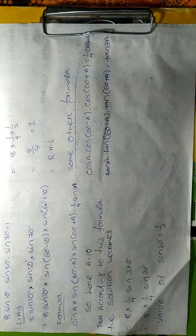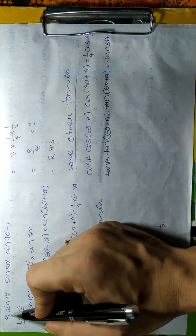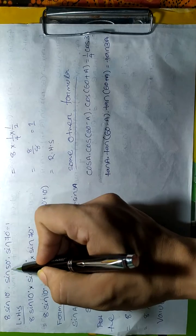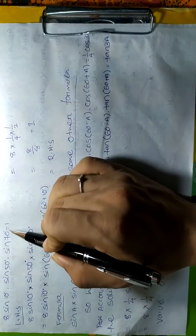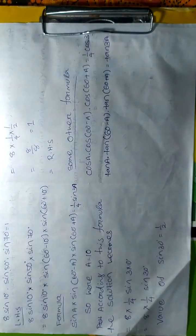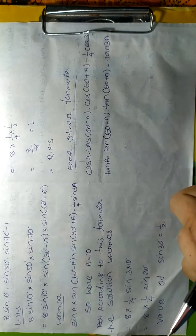Good morning guys, welcome to a new video. Today we are going to solve this problem which is sin(10°) · sin(50°) · sin(70°) = 1/8. In order to solve this problem, we have to take the left side first.